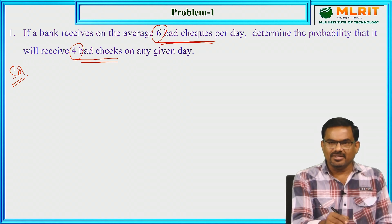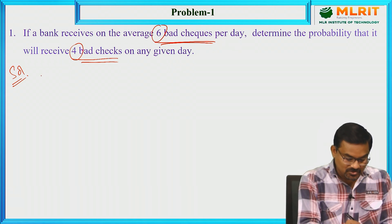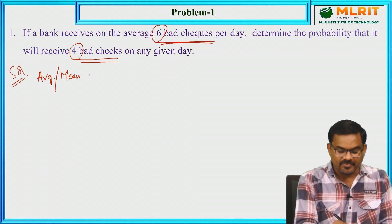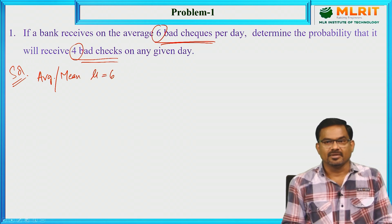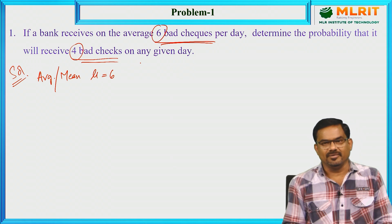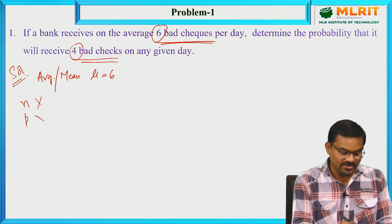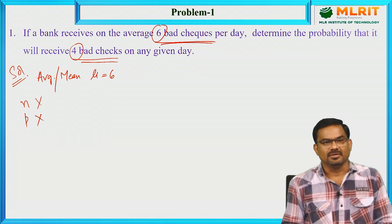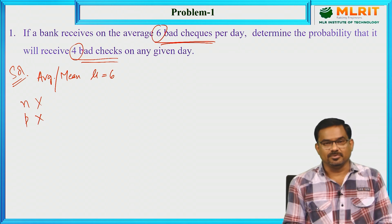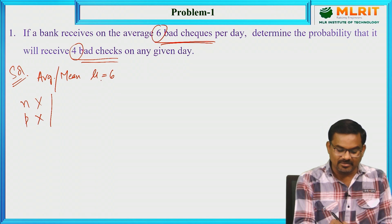The given information is that the bank receives on an average 6 bad checks per day, so the average or mean μ is given as 6. We need to find the probability of getting 4 bad checks on any given day. There is no number of trials n given, and p is also not given, so we cannot apply binomial distribution. We can apply Poisson Distribution since the mean μ is given.